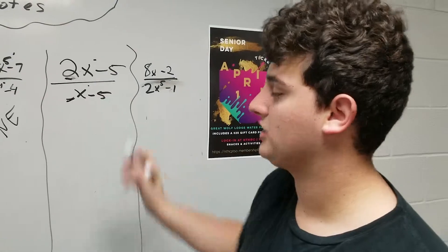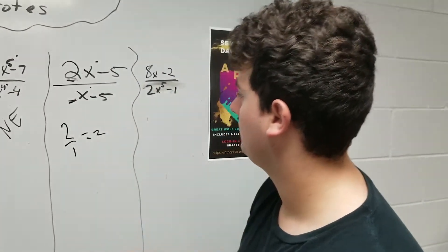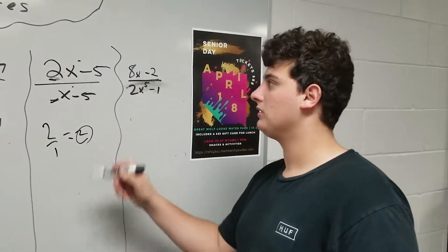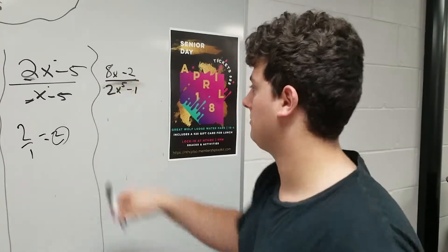We see here that it's just x, that's 1. So it would be 2 over 1, which is equal to 2. So 2 would be your answer for the horizontal asymptote here.